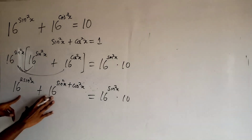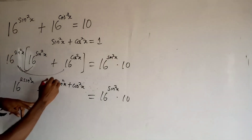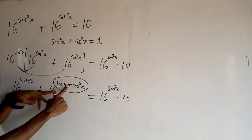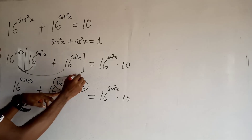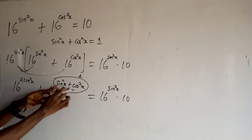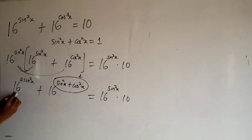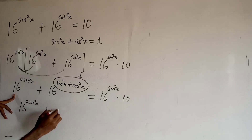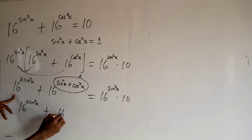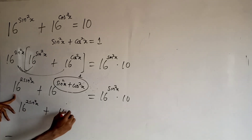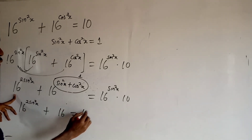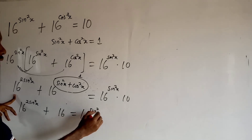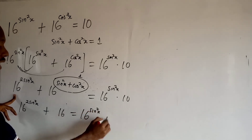At this point, sin squared x plus cos squared x equals 1, so we substitute 1 in this case. We have 16 to the power 2 sin squared x, plus 16 to the power 1 — which is 16 — is equal to 16 to the power sin squared x, times 10.